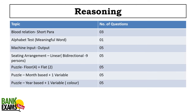In Reasoning Ability: three questions from blood relations, one question from alphabet test, five questions from machine input-output, five questions from sitting arrangement puzzles — three puzzles were there. Floor-based and month-based puzzles were common. Everyone who is preparing should practice floor-based, month-based, and year-based puzzles.